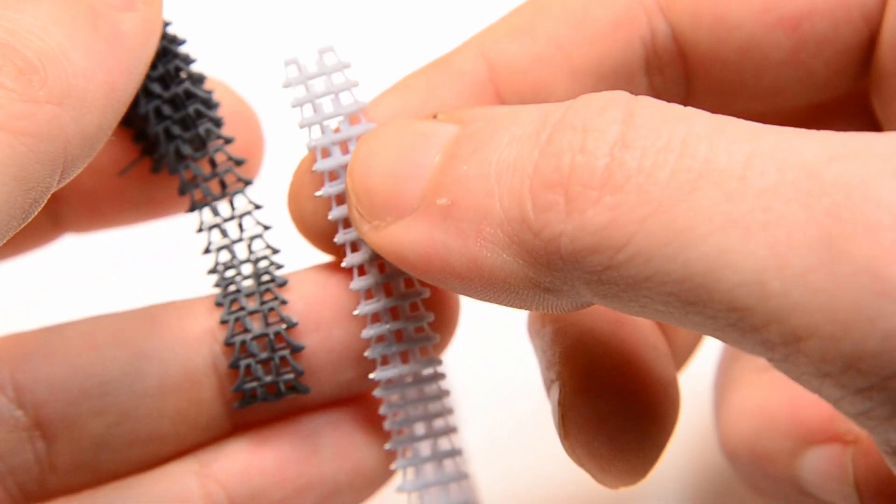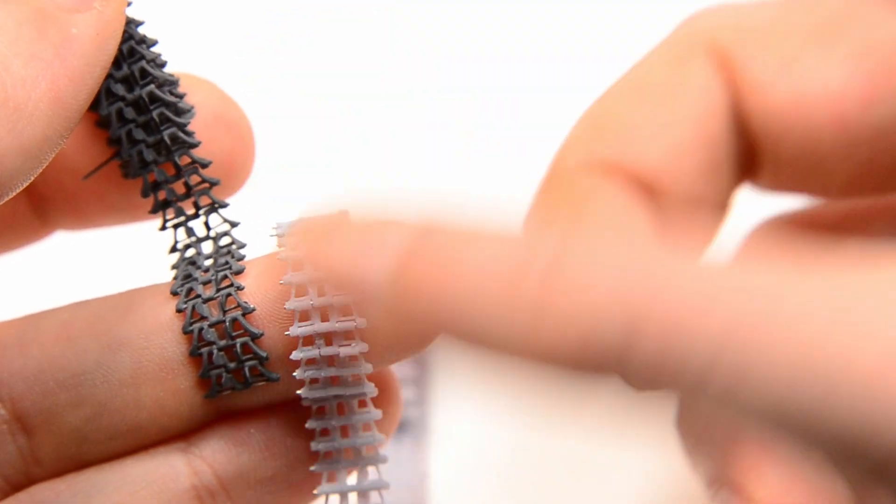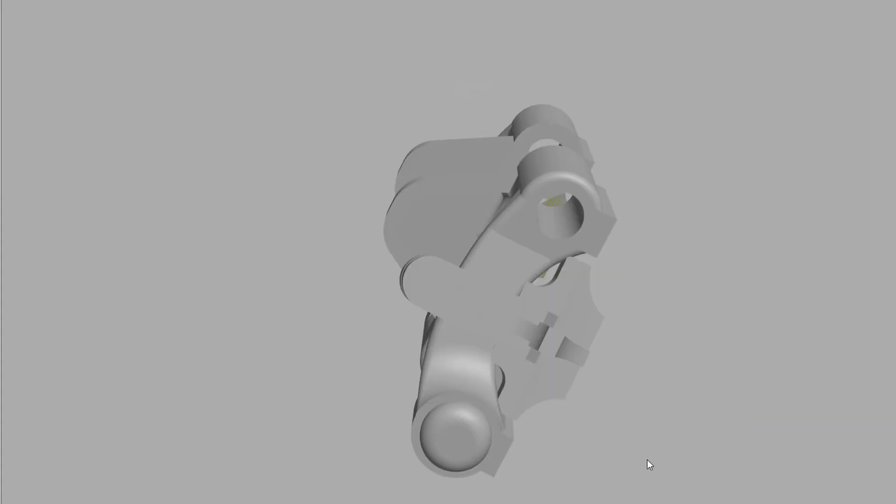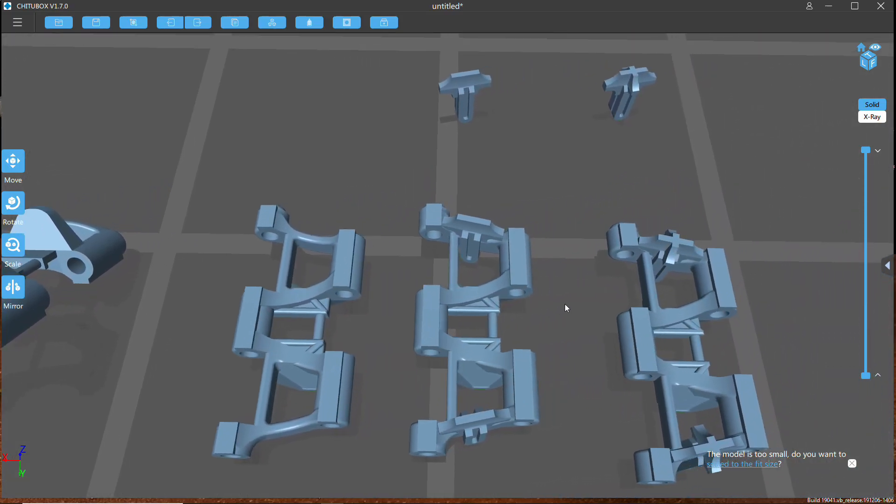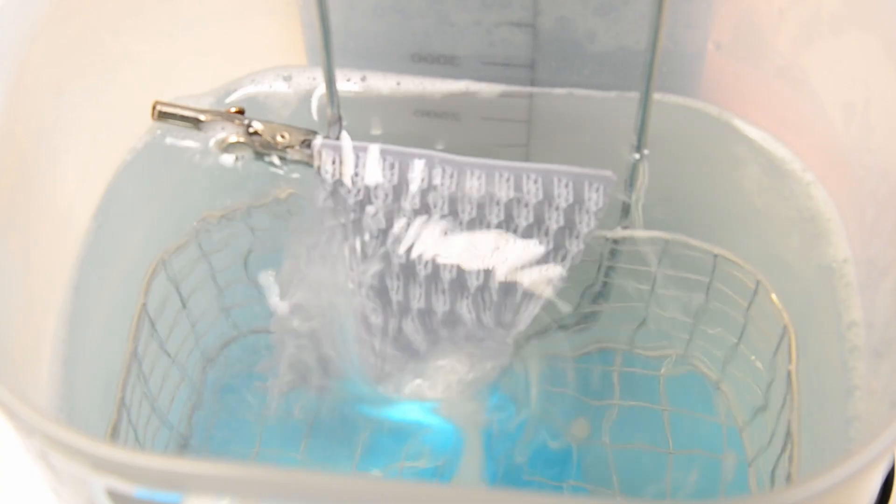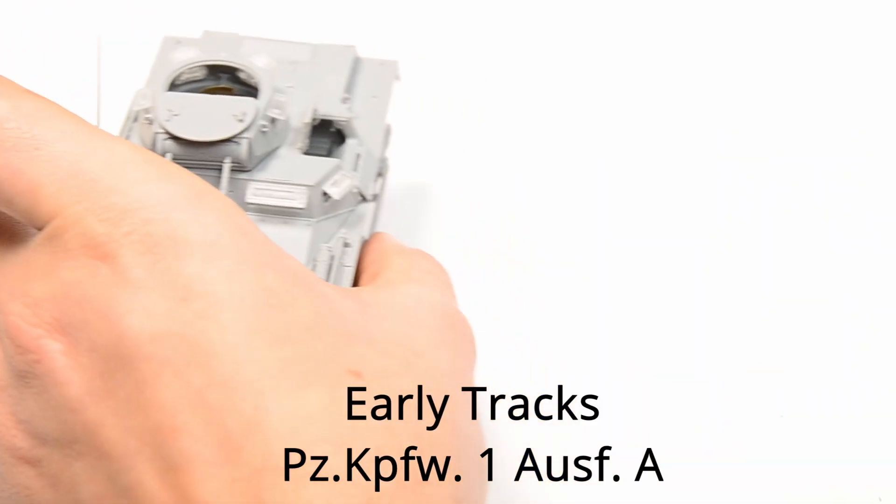About three weeks ago I showed you some 3D printed Panzer 1 tracks as a proof of concept. Today it's time for a deep dive with upgraded designs, all new variants, and more up-to-date hardware as well as better suited processing of the prints. Finally I'd like to compare them against Dragon, Tristar, and Italeri.